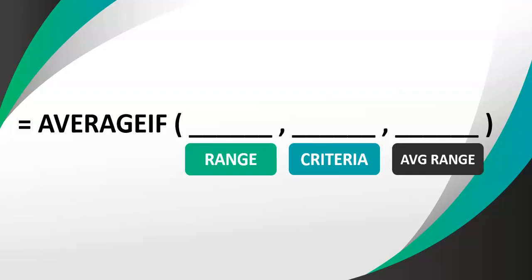The second parameter is the criteria — the rule that we are looking for in that range of cells mentioned in the first parameter. And if we find any cell in that range that meets the criteria, we then move to the corresponding value in the average range, which is the last parameter, and find the average of those values.